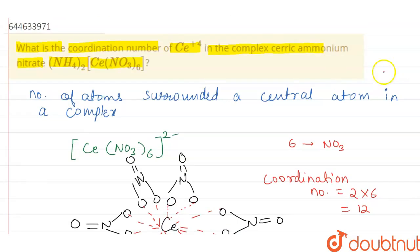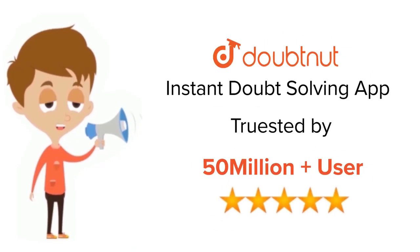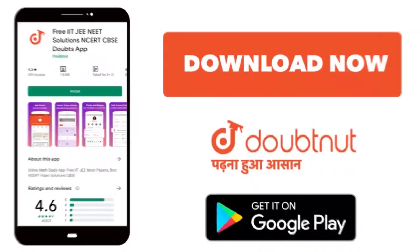this complex is 12. So the answer will be 12. Thank you! For class 6 to 12, IIT-JEE and NEET level, trusted by more than 5 crore students, download Doubtnut today.